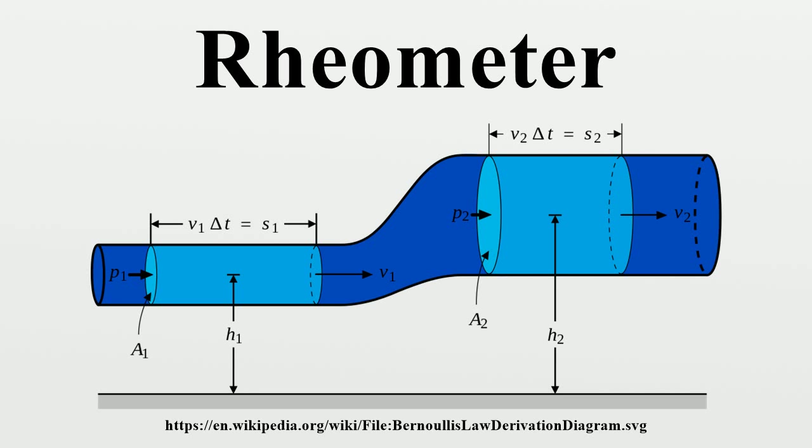Falling plate: A simpler version of the filament stretching rheometer. The falling plate rheometer sandwiches liquid between two solid surfaces. The top plate is fixed,